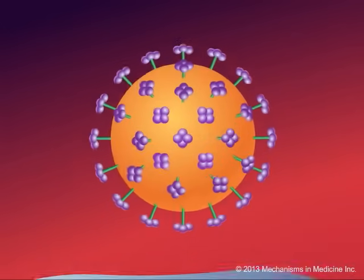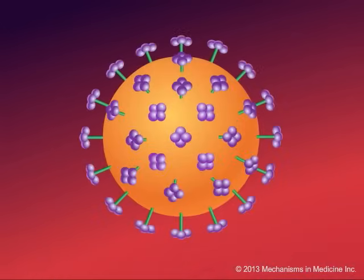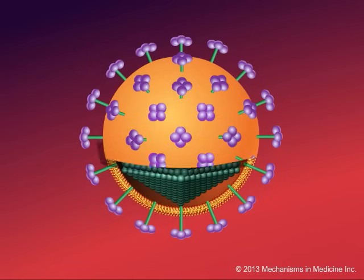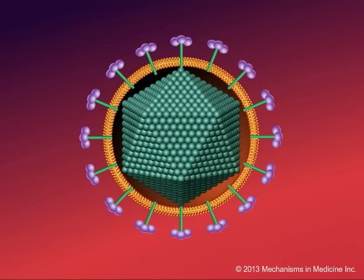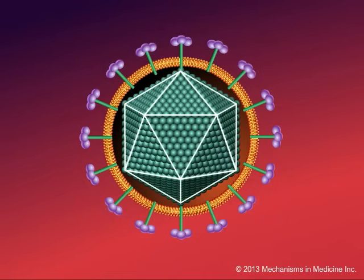The virus has an outer layer, and the outer layer contains a number of spikes. These spikes include the major glycoproteins of the virus that are responsible for direct interaction with the cell surface. You can also see the matrix core, which exists in the symmetrical shape of an icosahedron.